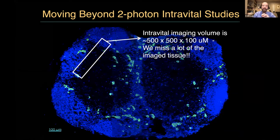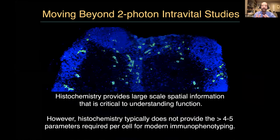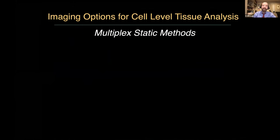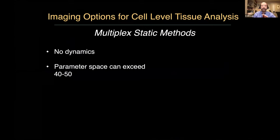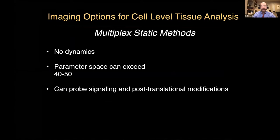It's a very nice technique for many things, but we only look at a very small volume even in a mouse lymph node. We're concerned not only about what's in the black in the imaging volume, but about what else is happening in the completely black space where you don't do two-photon imaging. So we decided years ago to always take our preps after live imaging and do histochemistry — only to realize that the typical way histochemistry was done when we started, ten or twelve years ago, was just two or three parameters, not the four or five parameters per cell for modern immunophenotyping. And so we developed multiplex static methods. They don't capture dynamics, but the parameter space can easily exceed 40 to 50 — I'll give you an example of 80 parameters.